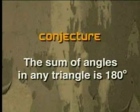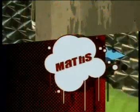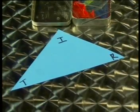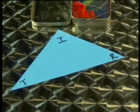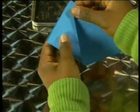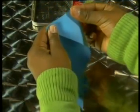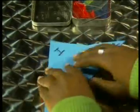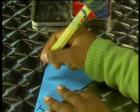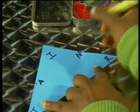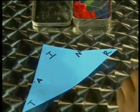Sharon, just in case you're still not quite with us, we're trying to prove that the sum of the angles in any triangle is 180 degrees. Let's take this triangle TRI. First, we're going to find the midpoints of TI and RI. Then we label the midpoint of TI as A, and the midpoint of RI as N, and draw in the line segment AN joining these two midpoints.